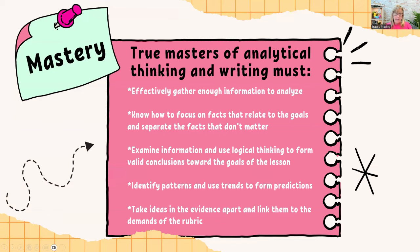So finally, mastery. True masters of analytical thinking and writing must do these things. Number one: you must effectively gather information to analyze — which you've done. You all have your videos, you all have your evidence to look at. That's effectively gathered. Number two: know how to focus on facts that relate to the goals and separate the facts that do not relate to the goals.